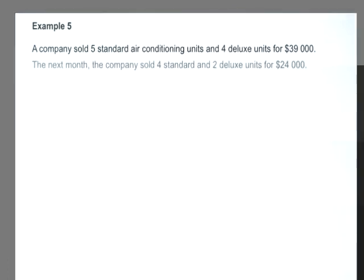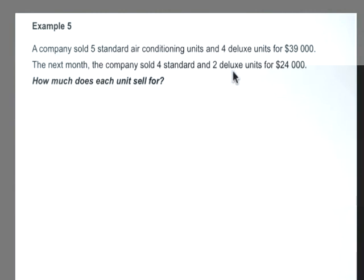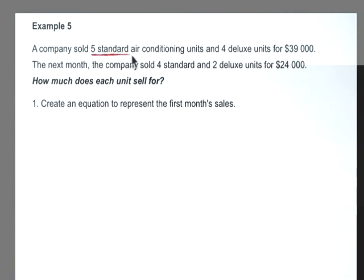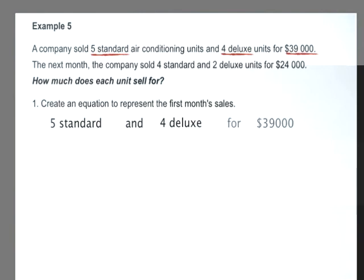A company sold five standard air conditioning units and four deluxe units for $39,000. The same company the next month sold four standard units and two deluxe units for $24,000. The question is: how much does each unit sell for — specifically, how much does each standard unit sell for, and how much does each deluxe unit sell for? We'll create an equation to represent the first month's sales: they sold five standard units and four deluxe units for a total revenue of $39,000.